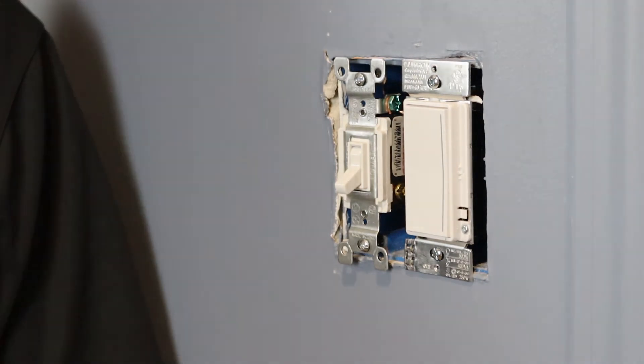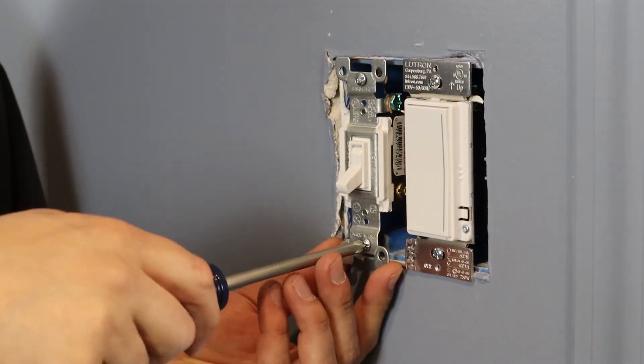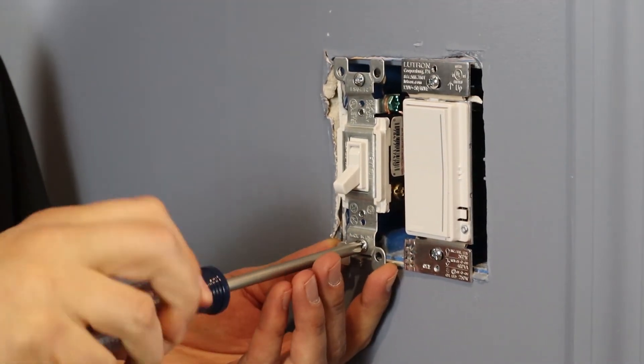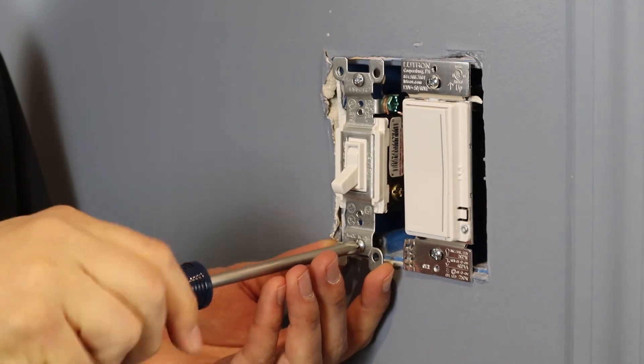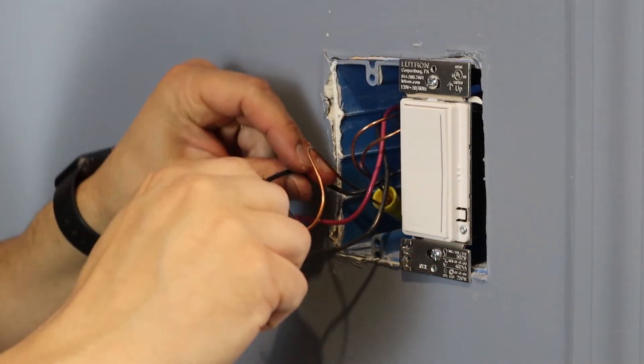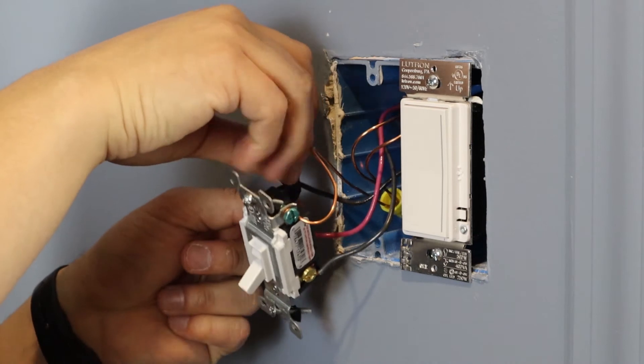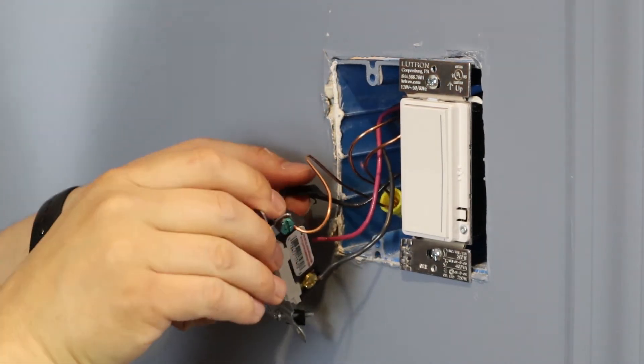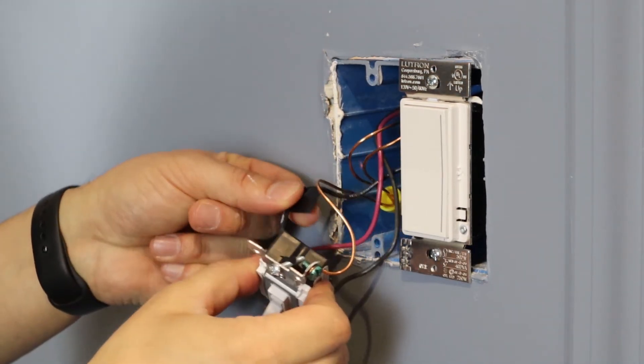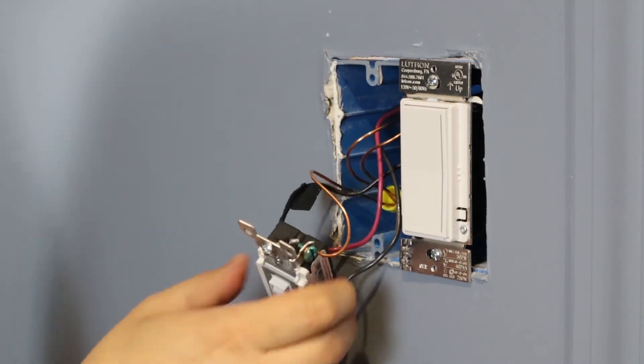Next, we want to pull the switch from the wall and tag the common wire the same way we did in our previous location. In this location, this black wire is our common wire. You can now remove the switch from the wall.